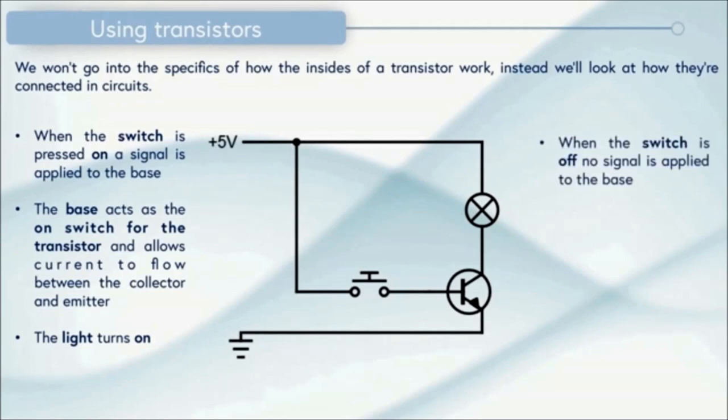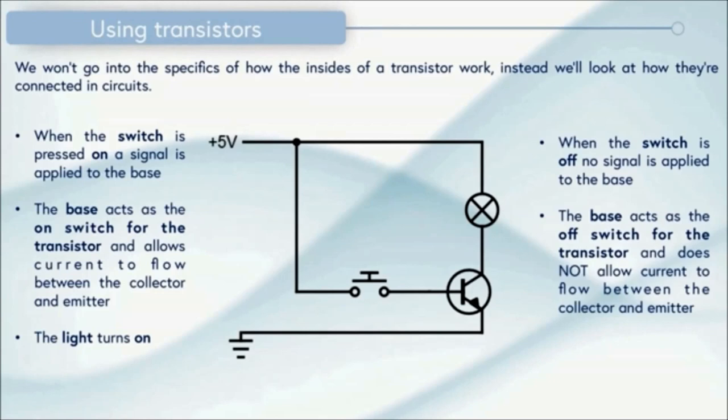On the other hand, when the switch is off, there's no signal applied to the base. This means the base acts as the off switch for the transistor and does not allow current to flow between the collector and the emitter. This means that the light is off.